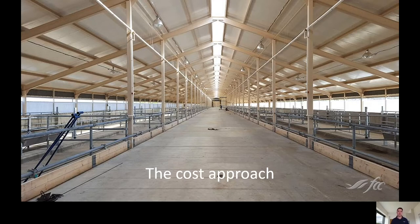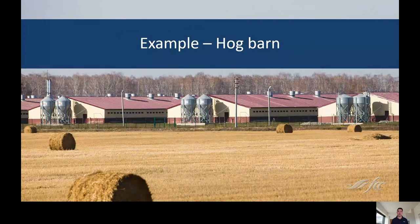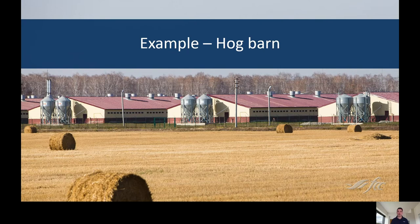Depreciation is what leads to a decrease in building value, and this can help explain why a new building is typically worth less than its construction cost. We'll demonstrate this with an example using a hog barn built in the 1990s. First, we estimate the cost to replace the barn using current costs and materials. Then, we consider the physical depreciation — the age and condition of the building — the functional obsolescence, for example it might have low ceilings, and external obsolescence such as proximity to a city or town. We then subtract the depreciation from the replacement cost estimate and add that value to the land estimate to determine a market value of the property. As mentioned, this approach is used when there are limited improved sales or you're dealing with a specialized building.